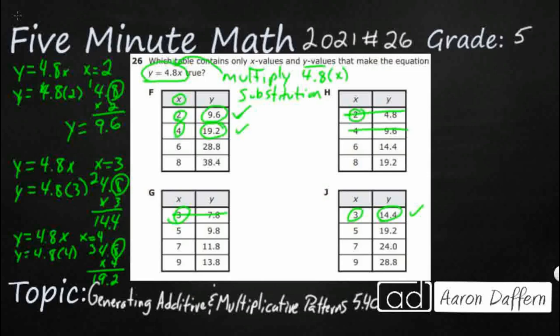And this is still incorrect there. So, f is still looking good. Let's check my 5s. So, let's say y equals 4.8x. x equals 5.